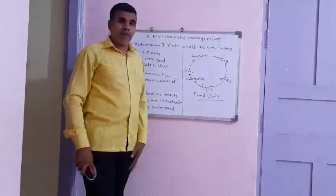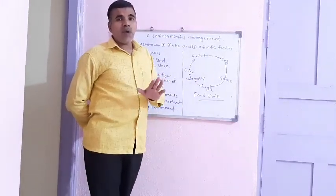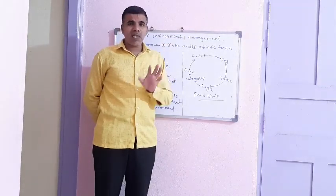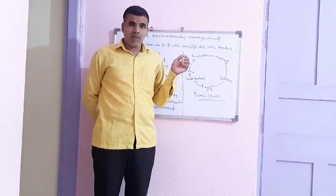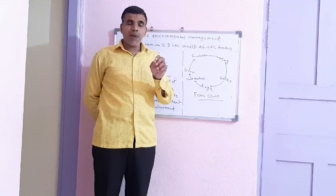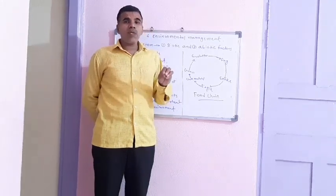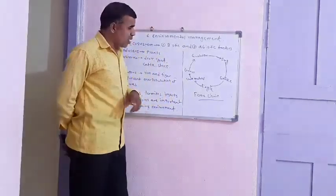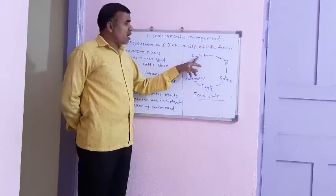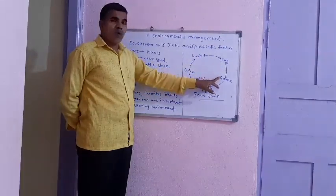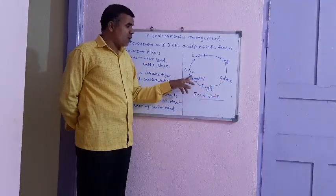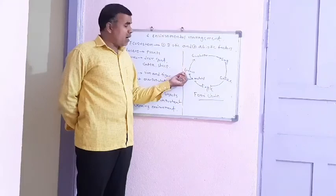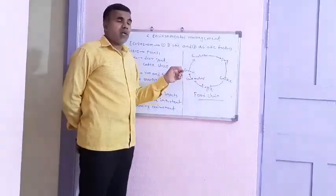Next, we have to discuss the food chain. Food is necessary for all living organisms — the three basic needs of human beings are food, cloth, and shelter. We obtain food from plants, and plants are the producers. In the ecosystem, different food chains are present. For example: grass is the food of grasshopper, grasshopper is the food of frog, frog is the food of snake, snake is the food of eagle, and the waste material of the eagle mixes into the soil, and again the food chain starts in this way.